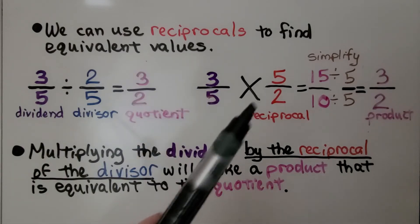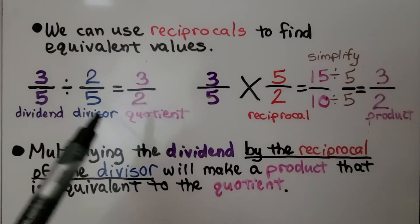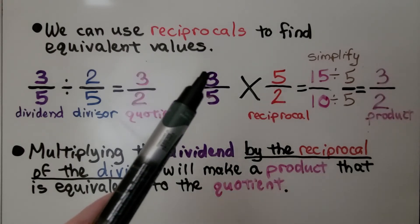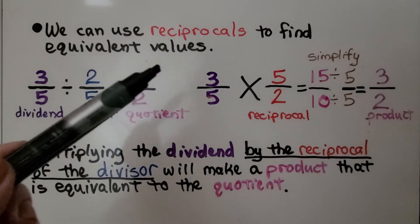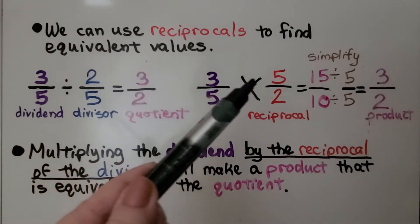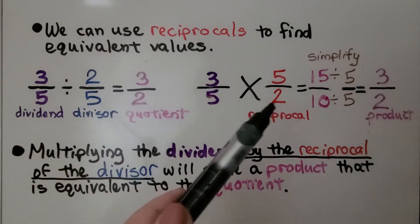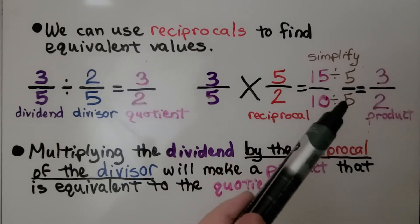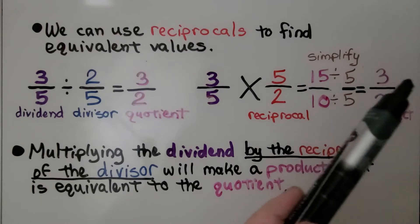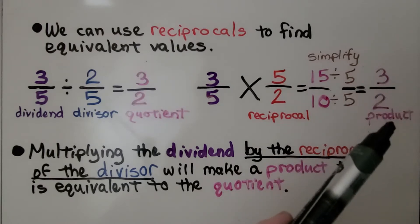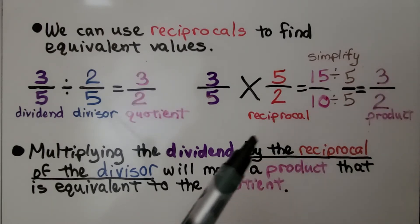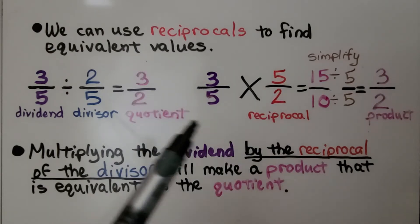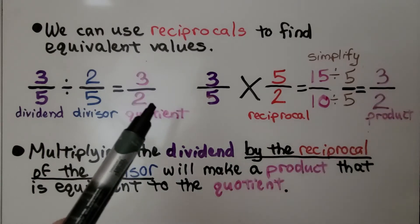We can use the reciprocal of the divisor two-fifths, which is five-halves, and multiply three-fifths times five-halves. We multiply straight across: three times five is fifteen, five times two is ten. We simplify using the greatest common factor, which is five, and we get three-halves as the product. So by multiplying the dividend by the reciprocal of the divisor, we got a product that was the same as the quotient.